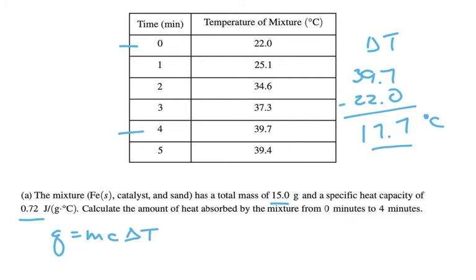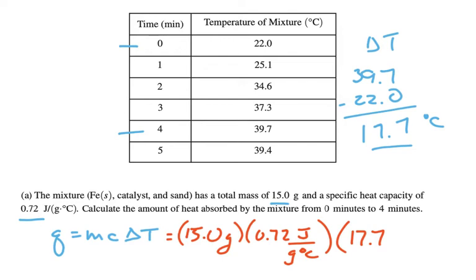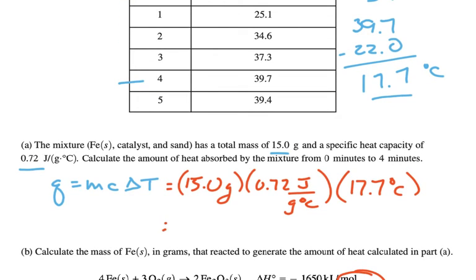This formula is on the equation sheet. The mass is 15 grams, the heat capacity C is 0.72 J/g°C, and delta T is 17.7°C. Doing the calculation gives 191.16 joules.